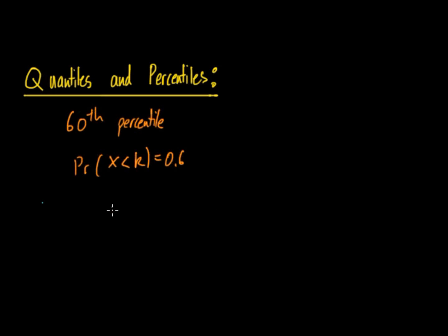So what that means is if you have a number, let's say we call it K, then the chance of it being less than the number is 60 percent.